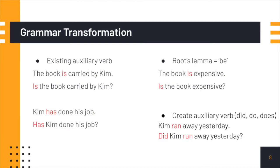The first case is that there exists an auxiliary verb. For example, in 'the book is carried by Kim', 'is' is the auxiliary verb — we would put it in the front. The second case is when the root lemma is 'be'; for example, 'the book is expensive' — we would put it in the front. The last case is that we need to create an auxiliary verb like 'did' or 'does'. In the example, because it is in the past tense, we would create 'did', put it in the front, and change the verb into its base form.